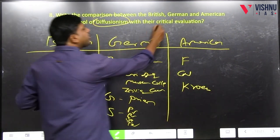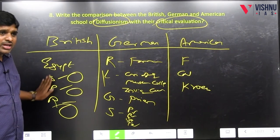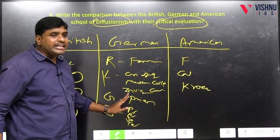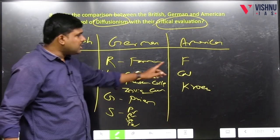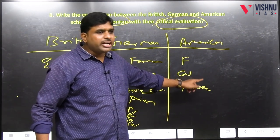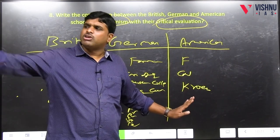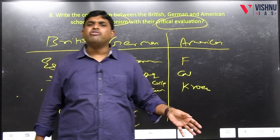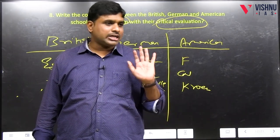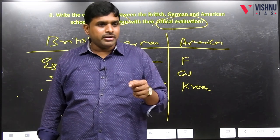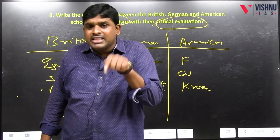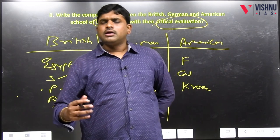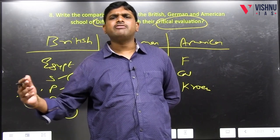Criticism: it is one-sided, it is ethnocentric; pan-Egyptianism in German people; they gave higher importance for material aspects and lesser for non-material aspects; they mainly studied only American societies; they did not clearly tell what is culture center and culture margin. However, this complete school failed to answer whether egg first or chicken first — whether evolution happened or diffusion happened. If diffusion is happening, from where did it originate? They did not answer that.